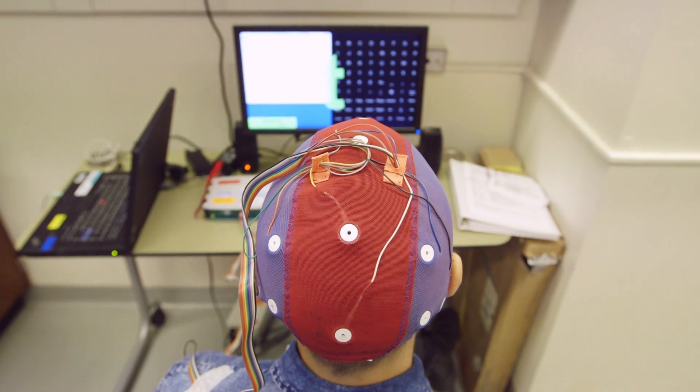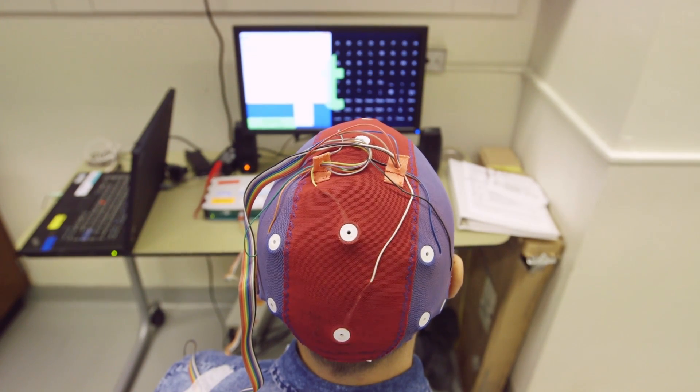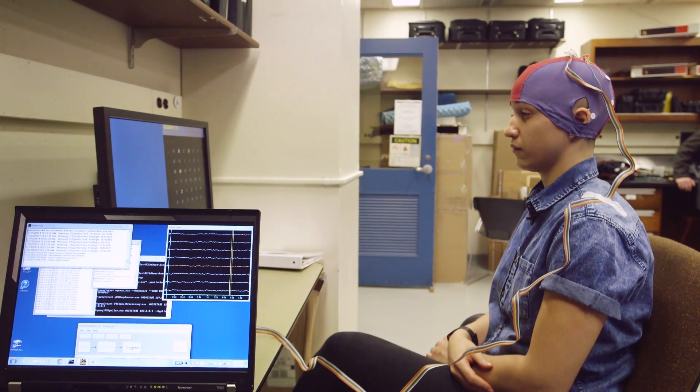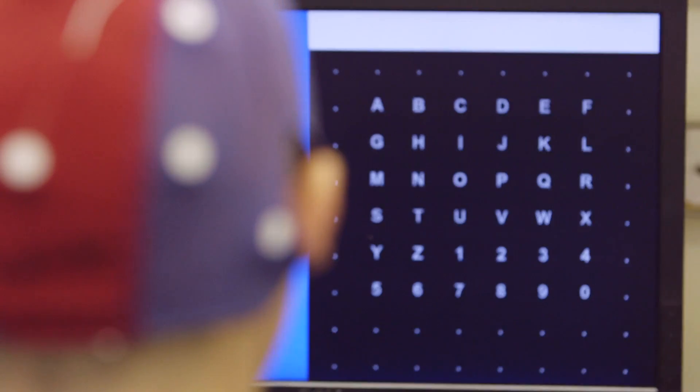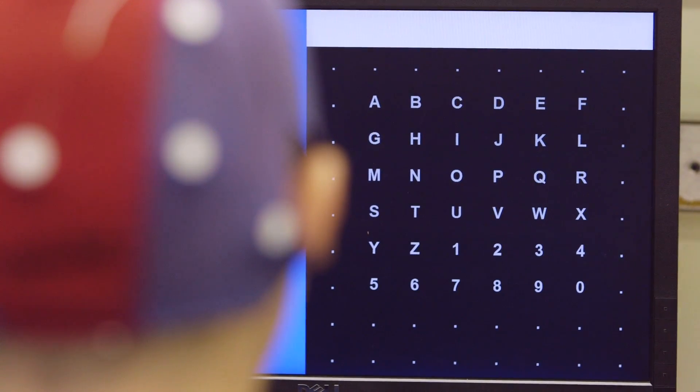When the person wants to select a particular item, the flash of that item produces a response in the brain that's different from all the other items. That's called the a-ha response or the oddball response. And that's when I'm focusing on a letter specifically. Yeah, you're paying attention. You want the eye, so you're paying attention to the eye and you notice how many times the eye flashes and you're really ignoring everything else.